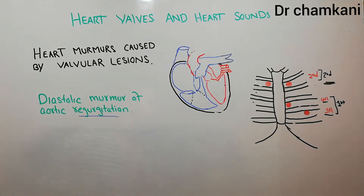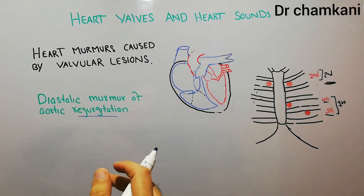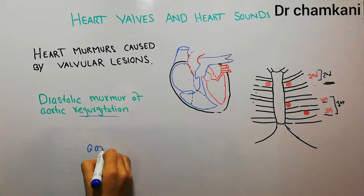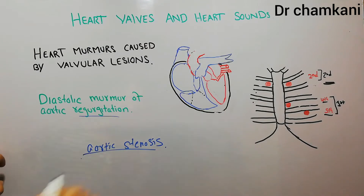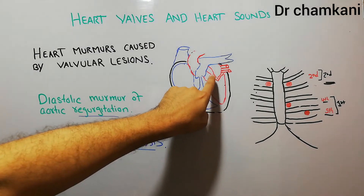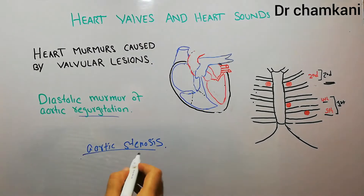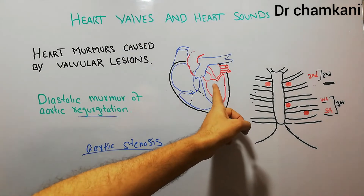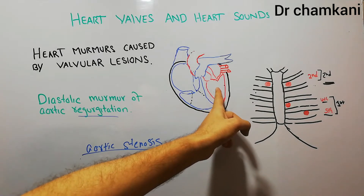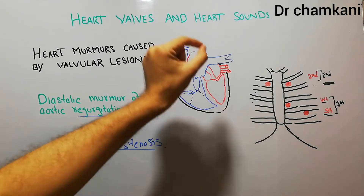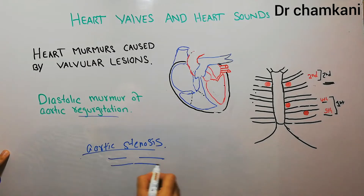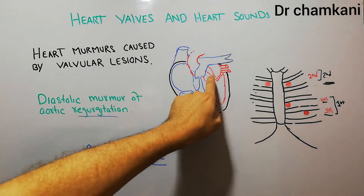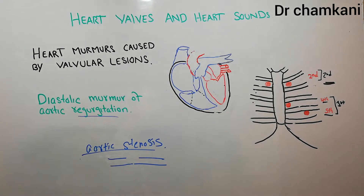In aortic stenosis, what happens is that the valve area is so small that when the left ventricle pumps the blood, it is very difficult for the left ventricle to pump the blood out into the aorta, because the aortic valve is stenosed. If this is the normal area, in stenosis the area has decreased so much. So murmur occurs because of the jet effects, because of the turbulence that occurs in the aorta, and we hear the murmur in systole when the left ventricle is contracting.